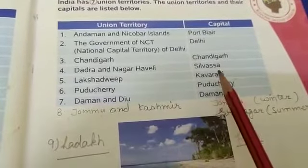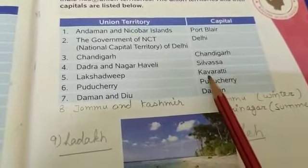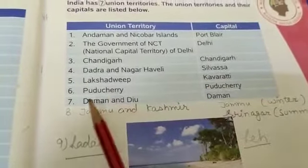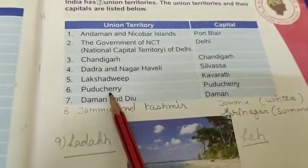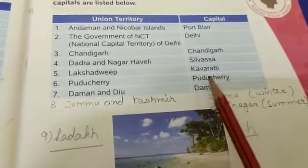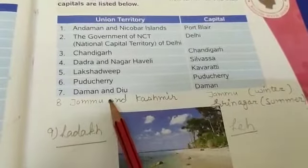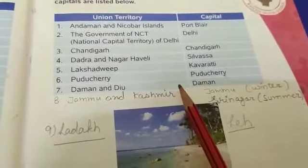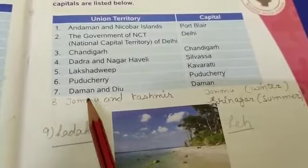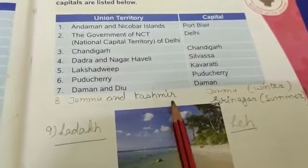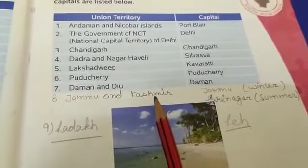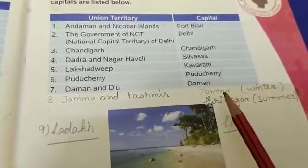Lakshadweep is a union territory and the capital is Kavaratti. Puducherry is a union territory and the capital is Puducherry itself. Daman and Diu is a union territory and the capital is Daman. Now Jammu and Kashmir — before it was a state, but now it is a union territory. The capital is Jammu in winter and Srinagar in summer.